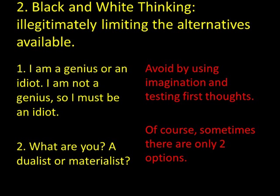Number two is the black-and-white thinking fallacy, also called the false dilemma, false dichotomy, or either-or fallacy. Psychologists call it polarized thinking or cognitive distortions. This fallacy arises when we illegitimately limit the alternatives available. For example, I might say you must be a Republican or a Democrat — you're not a Democrat, therefore you must be a Republican. The problem is I've limited it to two parties when really there are more: libertarians, anarchists, socialists, the Green Party.